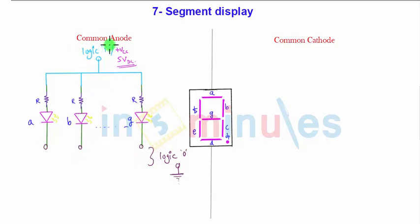That's why this is a common anode configuration. If you need to display 2, the number 2 is displayed in such a manner where segment A, B, this one is G, E and D. This is a representation of number 2.